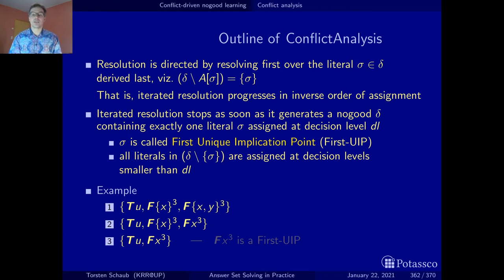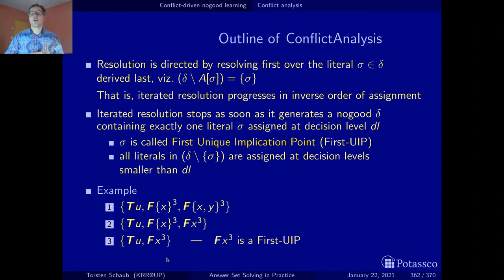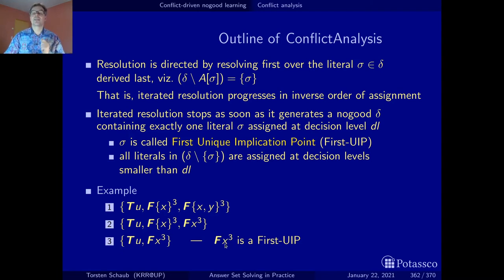In our small example, the unique implication point was this literal. Because once we go to level two or level one, this no-good will produce — that is, the complement of — this literal. T of x is unit resulting for this no-good on decision level two and one.